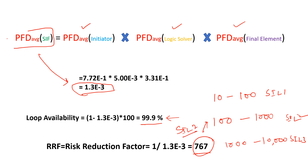However, there are two other things to consider before declaring the loop as SIL 2: hardware fault tolerance (HFT) and systematic capability. Depending on these, the final SIL declaration could be SIL 1, 2, or 3. Using this simplified Markov analysis approach, you can calculate the SIL level entirely in Excel without sophisticated software like Exsilentia or SIL Solver. Try it on your own and verify your calculations — for any doubts, feel free to write to me.